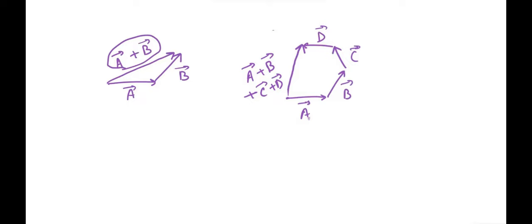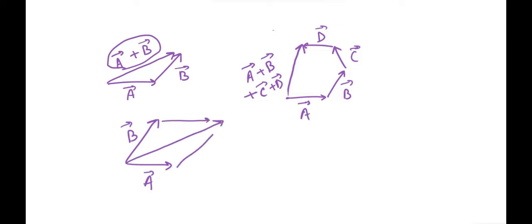An equivalent way of adding vectors is to follow the parallelogram rule. If you have vector a and you draw vector b at the same starting point, the resultant would be the diagonal of the parallelogram these two vectors create. Not the sharpest drawing, but I think you have the idea.